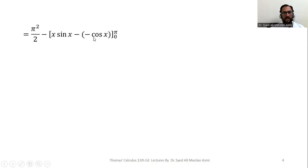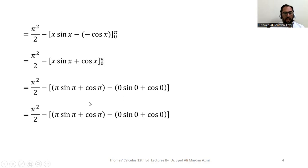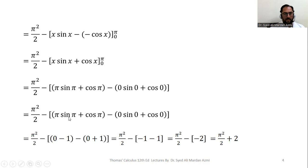We get x sine x minus minus cos x, evaluated from 0 to pi, which simplifies to pi squared over 2 minus x sine x plus cos x, from 0 to pi. Applying the fundamental theorem of calculus — upper limit minus lower limit — we replace x with pi and then with 0: pi sine pi plus cos pi minus (0 times sine 0 plus cos 0). Since pi sine pi equals 0, cos pi equals minus 1, and cos 0 equals 1, we get minus 1 minus 1 equals minus 2. The final answer is pi squared over 2 plus 2.